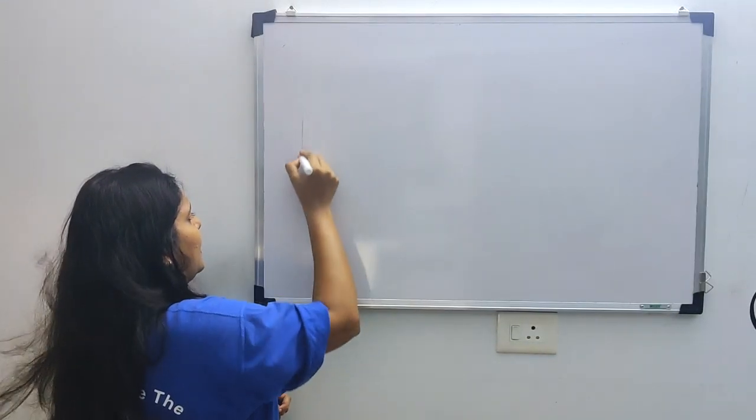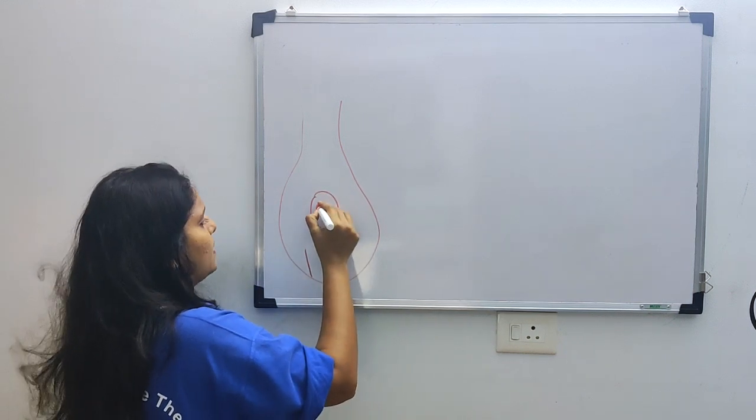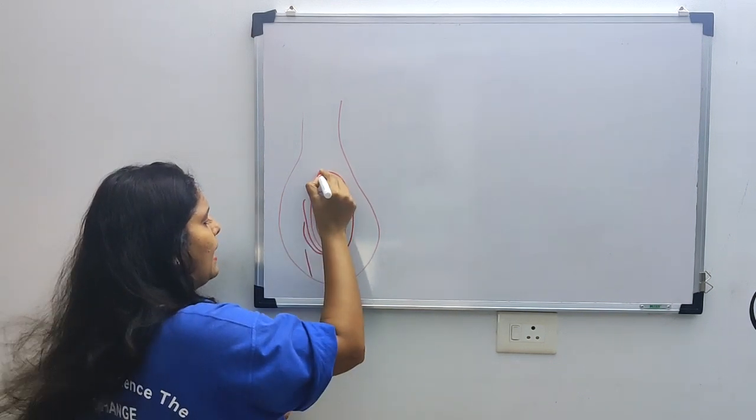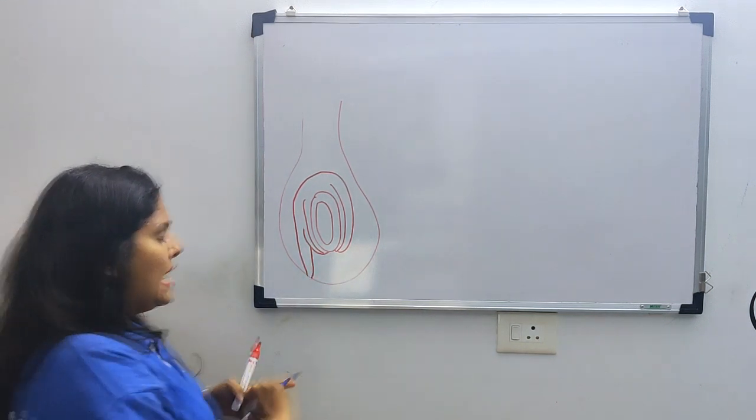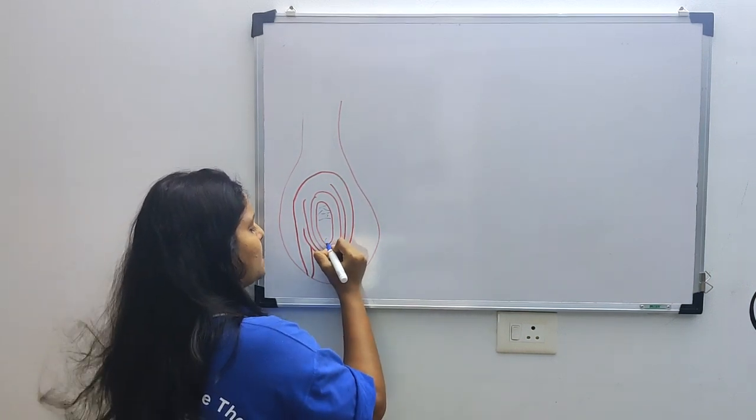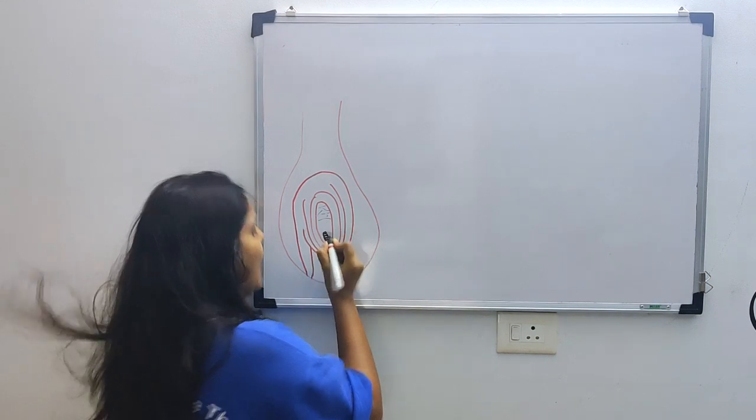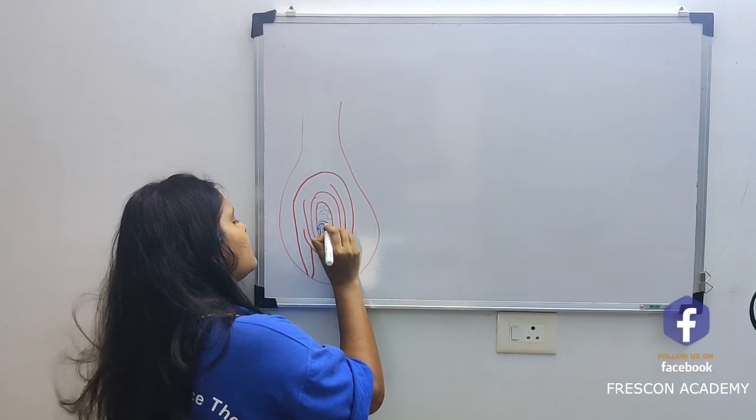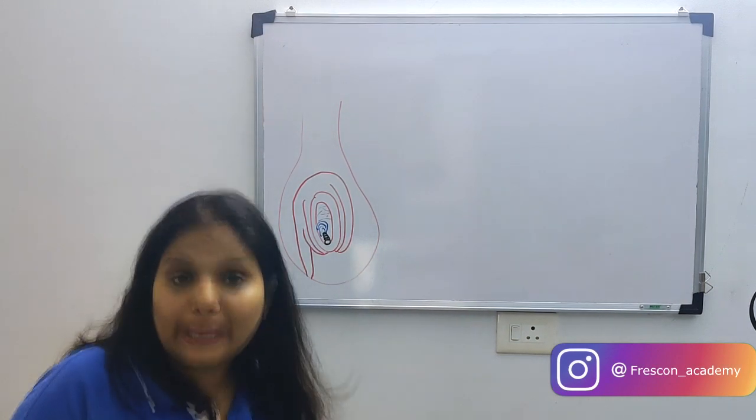Where is this embryo? Remember, in our carpel ovary, this is our nucellus which contains our embryo. The nucellus has two integument coverings - two integuments, right? And this is where it is attached through the funicle. Now here, here what is this? Endosperm, right? Here we have suspensor cells, and ultimately we have the embryo. You have seen how many cotyledons are present?